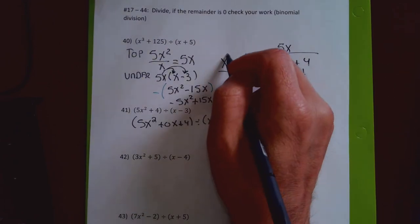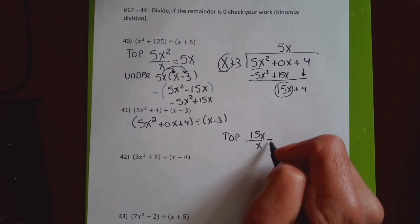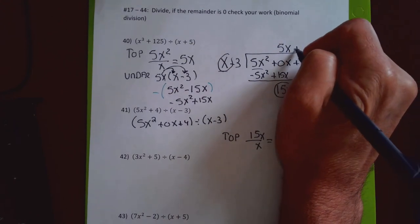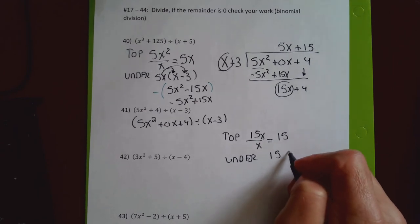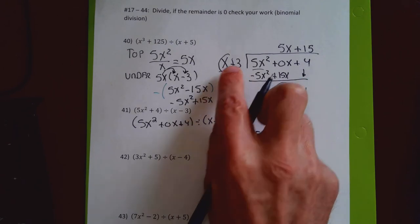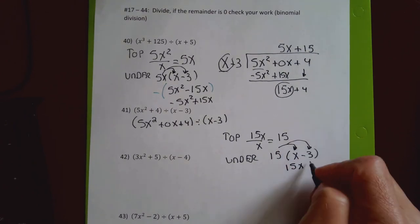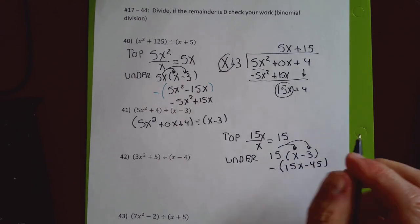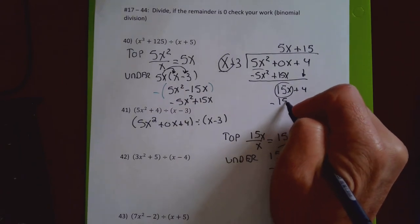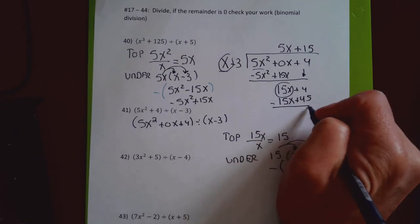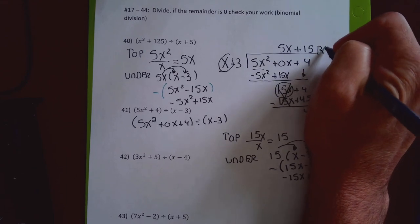Last step on top: I take 15x divided by x — the x's cancel — leaving positive 15 on top. I multiply 15 by x minus 3: 15 times x is 15x, 15 times minus 3 is minus 45. Finding the opposite gives negative 15x plus 45 under the division bar. The 15x's cancel, and 4 plus 45 gives a remainder of 49.